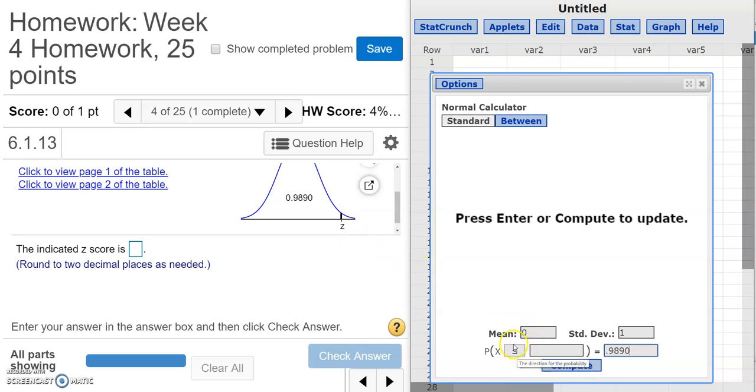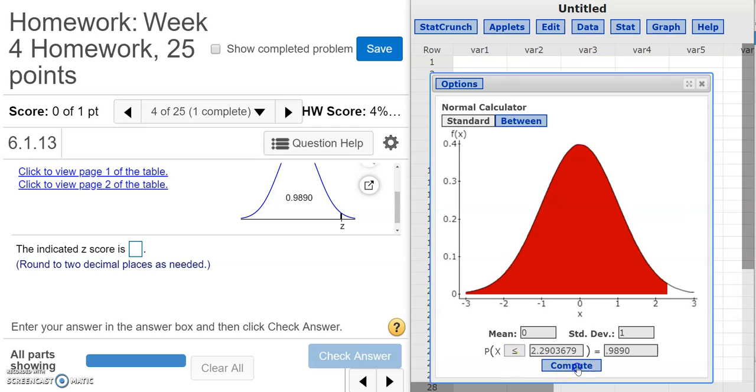So I want to make sure that this value right here is set to less than. If I choose greater than, I would be talking about this section over here, greater than or to the right of the z. But that's not what I was given. I was specifically given this area that is to the left or less than that z value. So I'm going to leave this as less than. And then if I click compute, I will be given basically the same picture that I have here. So you can see I have this big area here, which stops right here. And that whole red area is the area 0.9890, just like it is in this picture over here.